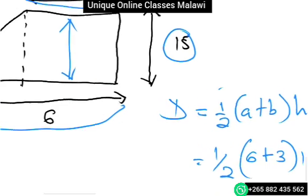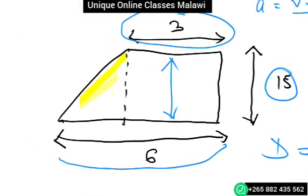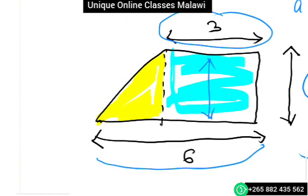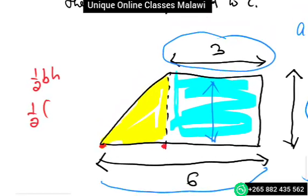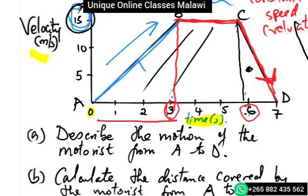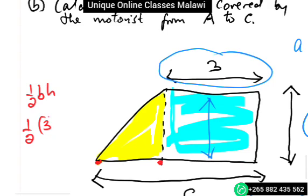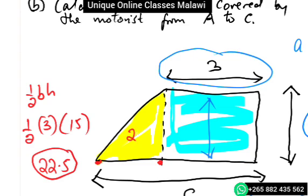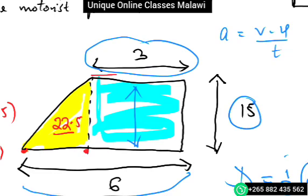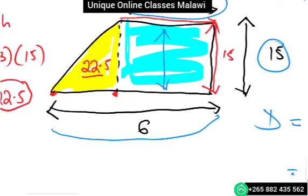Alternatively, you can find the individual areas. The triangle here has base 3 and height 15, so half base times height equals 1.5 times 15, which is 22.5. The rectangle from here to here has length 3 and height 15, so 3 times 15 equals 45.